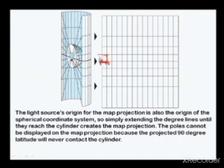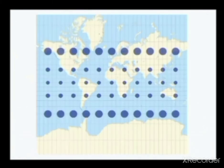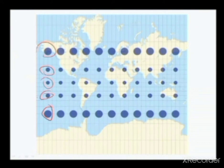As you go to a higher latitude, the distance changes. On your meridians, they are equally spaced. This is an example of a cylindrical projection.